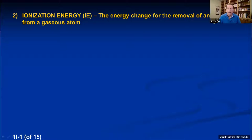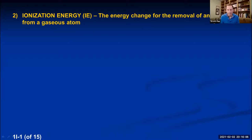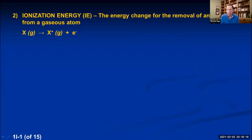Ionization energy was actually defined in experiment three when we were talking about the hydrogen atom. Ionization means you pull an electron off of an atom. So the ionization energy is the energy needed to pull an electron off of an atom — specifically, the energy change for the removal of an electron from a gaseous atom. When you supply energy, an electron is removed, the atom becomes an ion with a positive one charge.